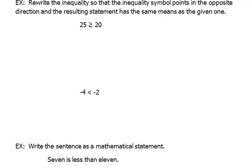In our next example it says rewrite the inequality so that the inequality symbol points in the opposite direction and the resulting statement has the same meaning as the given one. Okay, so we have 25 is greater than or equal to 20, which is a true statement, but they want us to rewrite this so that we are using a less than or equal to. That means we're going to have to flip over our numbers so that 20 is still smaller than 25, or saying 25 is larger than 20. These are the same exact thing.